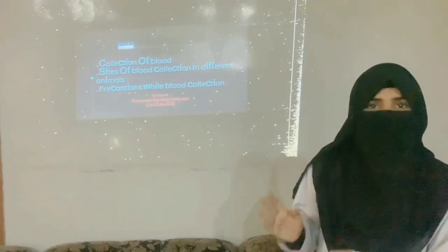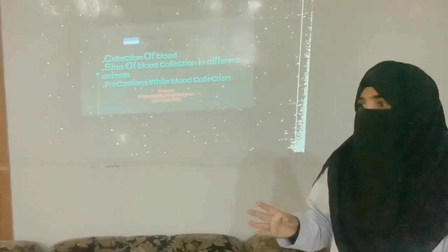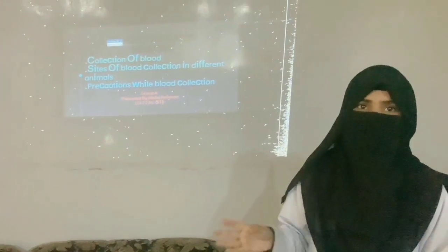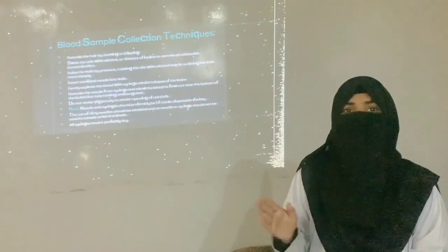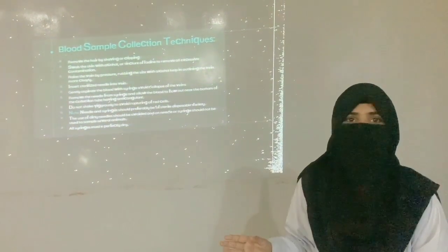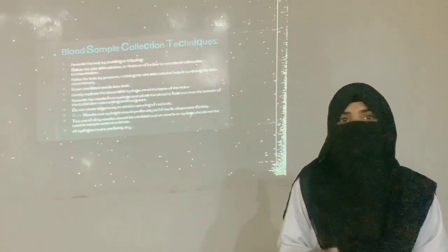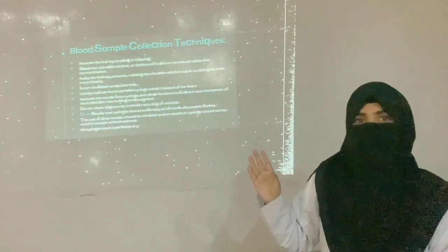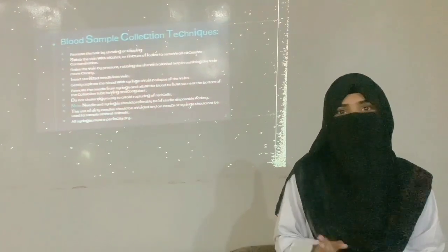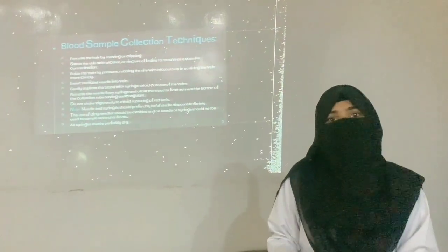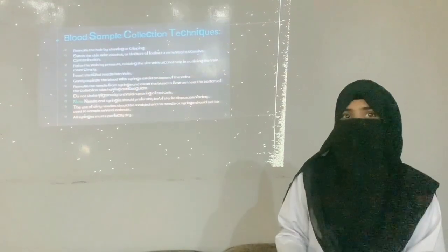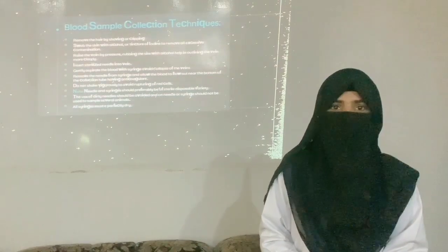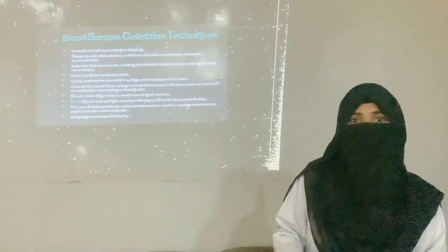What is blood? Blood is a collection of WBCs, RBCs, plasma, platelets, and so forth. The site of blood collection varies in different animals — such as the cephalic vein, spinous vein, recurrent tarsal vein, wing vein, and mostly the jugular vein. To collect blood, we need an animal; we have a goat. Before collecting blood, we should be aware of safety rules.